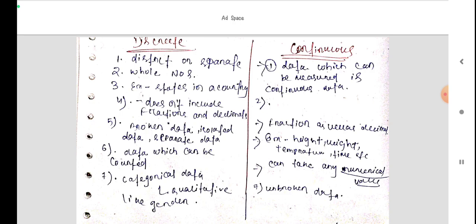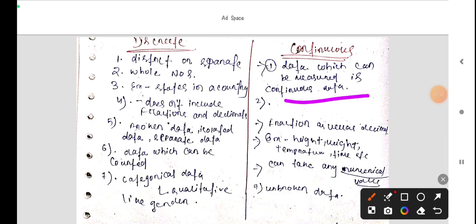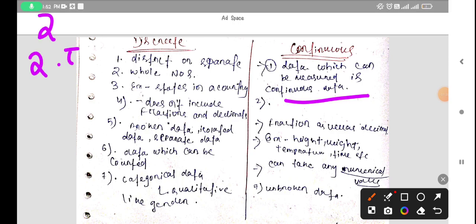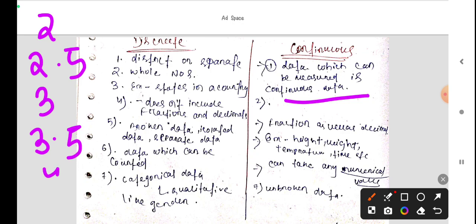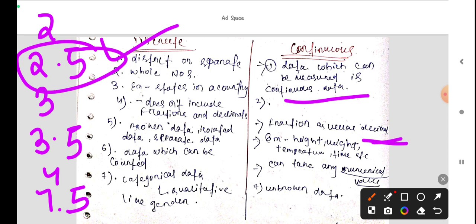In continuous series, data which can be measured. Let's say here is 2, after that is 2.5, after that is 3, then 3.5, then 4, 4.5. This calculates decimals. So fractions and decimals are included.